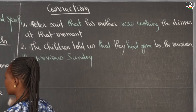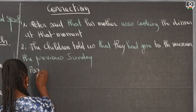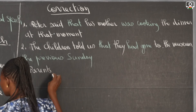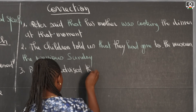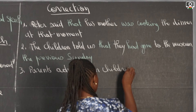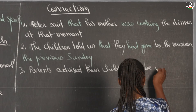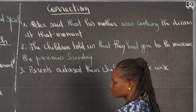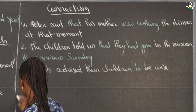Number three: 'Be wise' — this is an imperative sentence and it is a positive sentence, so we have: parents advised their children to be wise. From the imperative, you now have the infinitive form.